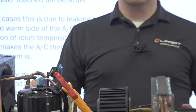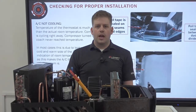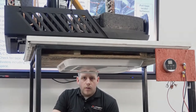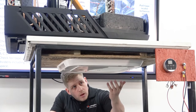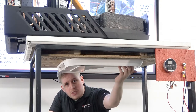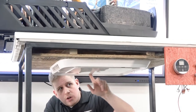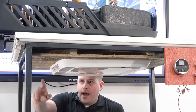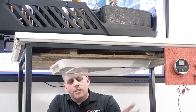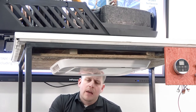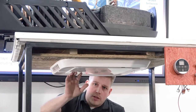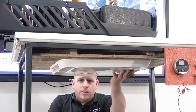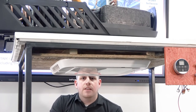Once you have that amp draw, go to the coach side of the air conditioner to get your intake and discharge temperatures. Take your intake temperature at the return air grill. Take your discharge temperature at the forward or aft discharge vent. For a ducted ceiling assembly, you can take the discharge either at the air dump or at the closest vent to the air conditioner.